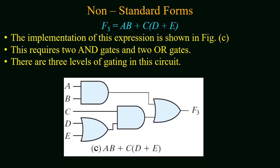If we implement the function f3, shown in figure c, the implementation requires two AND gates and two OR gates. First, for parenthesis, d and e are ORed, and the result is multiplied with variable c using AND gate. In parallel, a and b are multiplied, and finally an OR gate is used to obtain the final output f3. The function is implemented in three levels of gating.